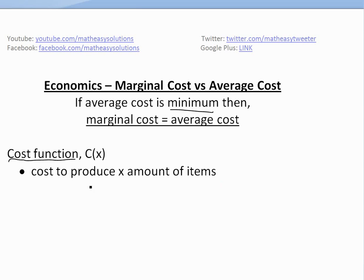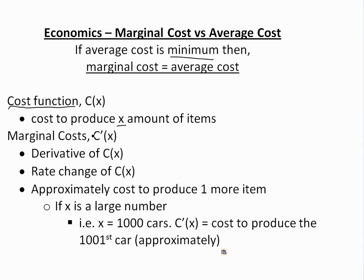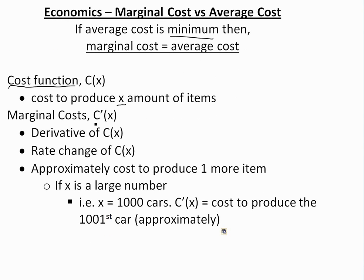The cost function is basically just the total cost of producing X amount of items. Recapping marginal cost from our previous video — you can watch it on the Dropbox link below — it's just the derivative of the cost function, C of X, or just the rate of change of it. You could also approximate it as equal to the cost to produce one more item.